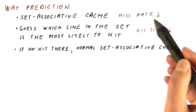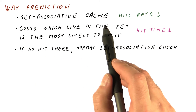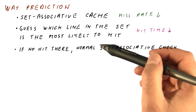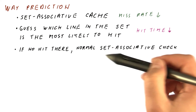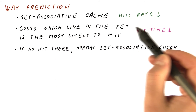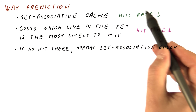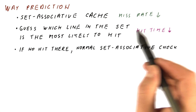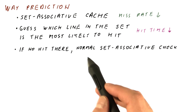Overall, our miss rate is that of a set associative cache. We either find it via the predicted line or via the normal set associative check, so the miss rate is similar to a set associative cache. But the hit time, if our guesses are mostly right, is mostly that of a direct-mapped cache. So we have combined the low miss rate of a set associative cache with most of the time getting the hit time of a direct-mapped cache, and only sometimes having to suffer the longer hit time of a normal set associative cache.